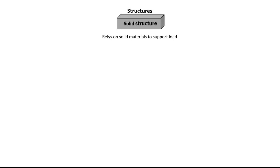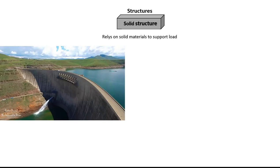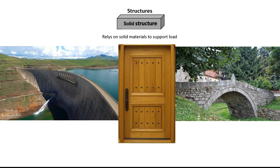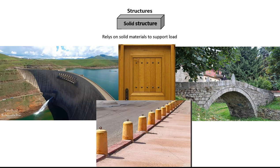Solid structures rely on strong construction materials to support loads. Dams and stone bridges like this are able to resist heavy weights pressing on them, including strong winds and natural disasters. Doors are also considered to be solid structures — the solid ones, but not the hollow core doors. And these cement pylons are another example.